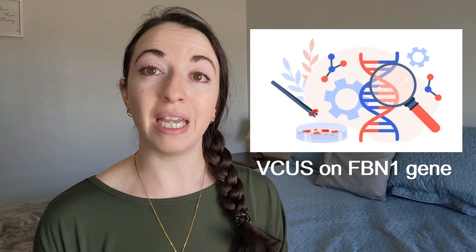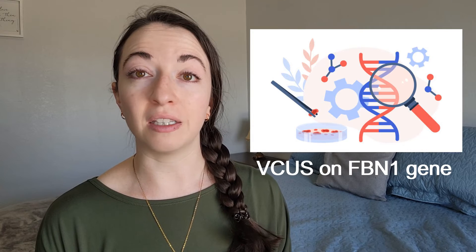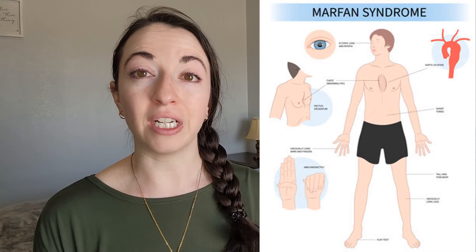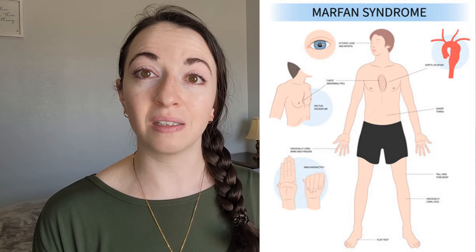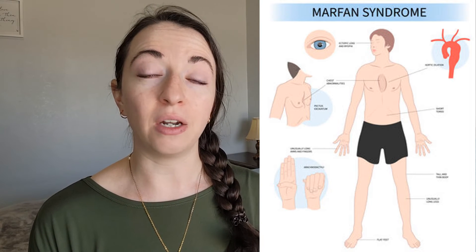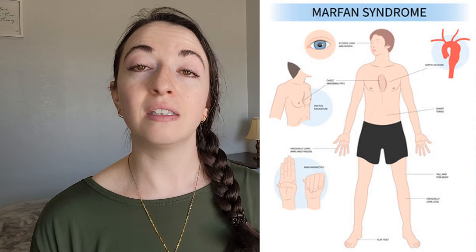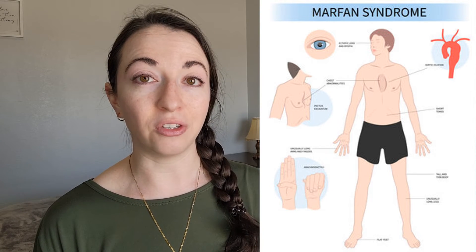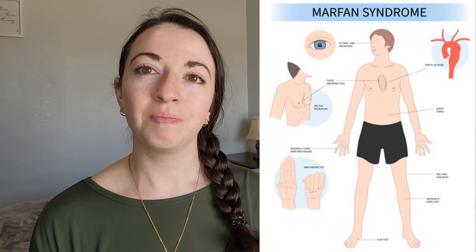For example, I have a variant of uncertain significance on my FBN1 gene — a gene with a known mutation that causes Marfan syndrome, another genetic connective tissue disorder with many similarities to EDS. Although I have an FBN1 variant, I do not have Marfan syndrome because the variant I have is not a known pathogenic variant for that condition.